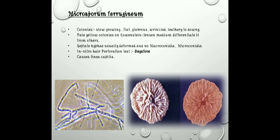The next species is Microsporum ferrugineum. The colonies are slow-growing, flat, glabrous, wrinkled, and leathery to brownish. Pale yellow colonies on Löwenstein-Jensen medium differentiate it from others. Septate hyphae are usually deformed and no macroconidia or microconidia are present, as seen in this picture. The in vitro hair perforation test is negative. It causes tinea capitis.